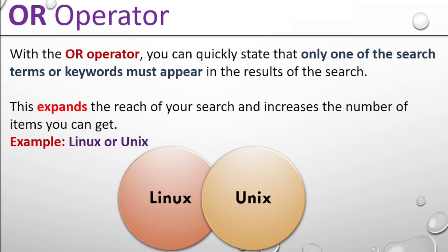Next is the OR operator. With the OR operator, only one of the search terms or keywords must appear in the results. This expands the reach of your search and increases the number of results you can get. Example: Linux OR Unix — when searching with this operator, you will find at least one of these keywords in the resume.